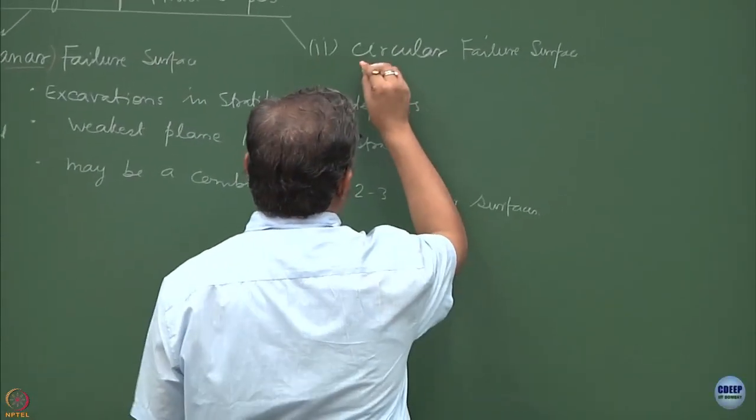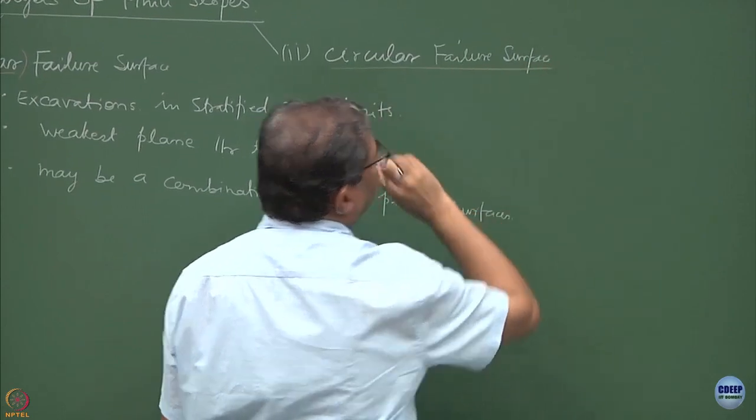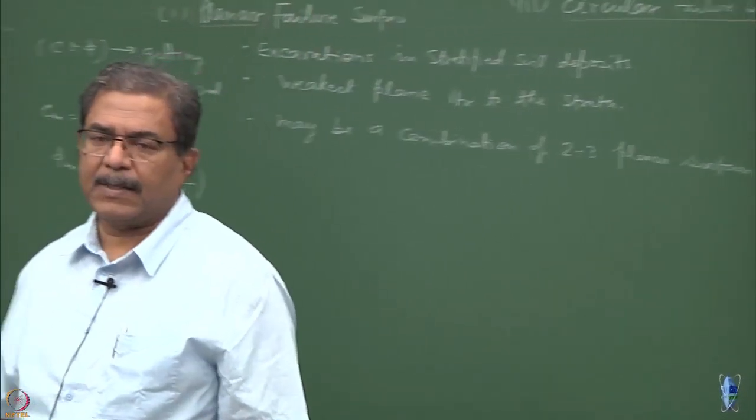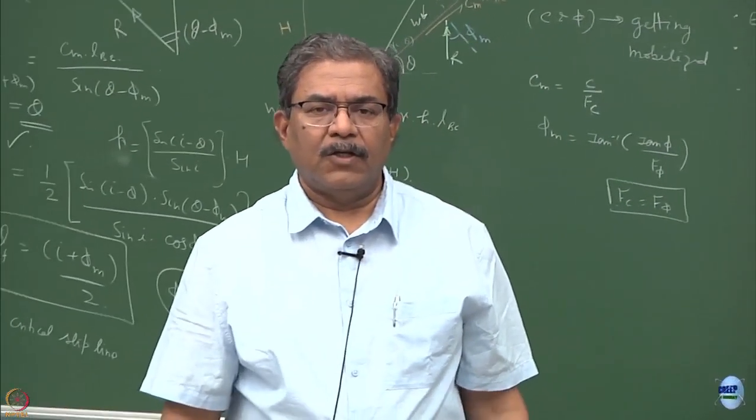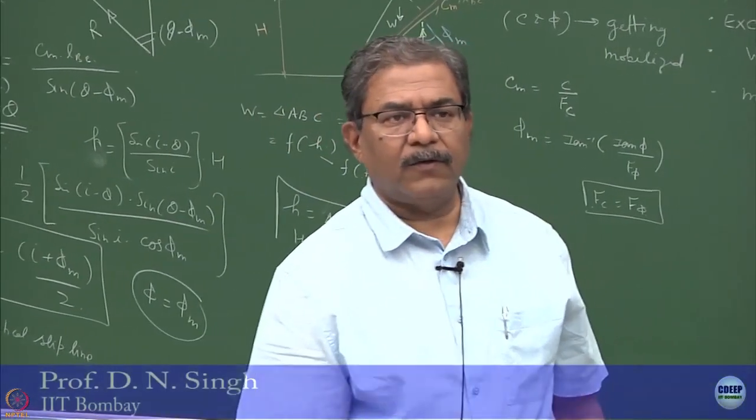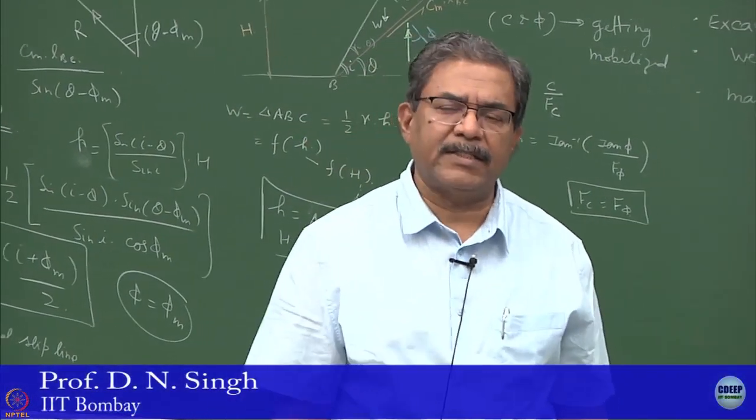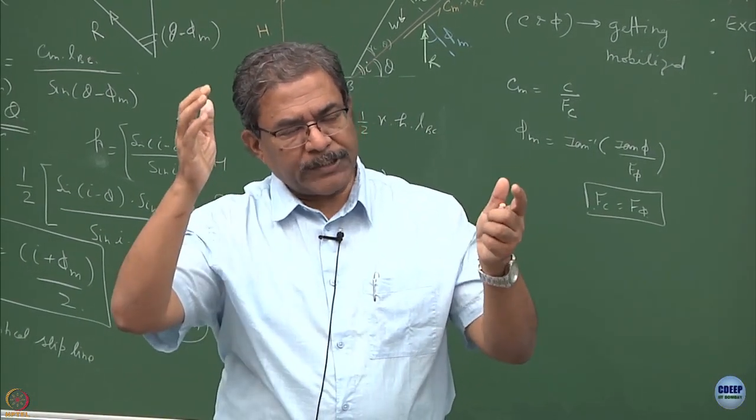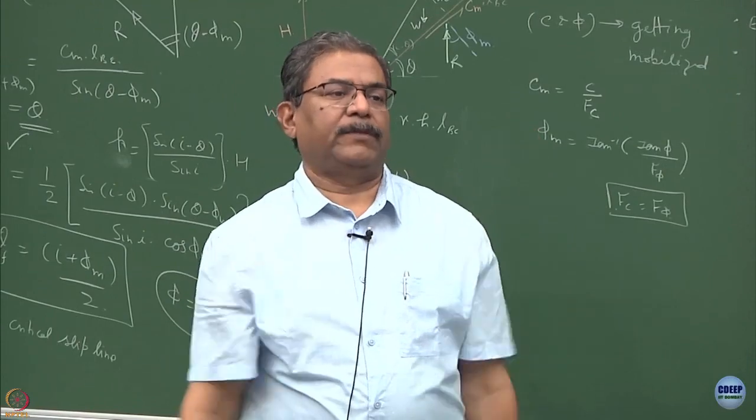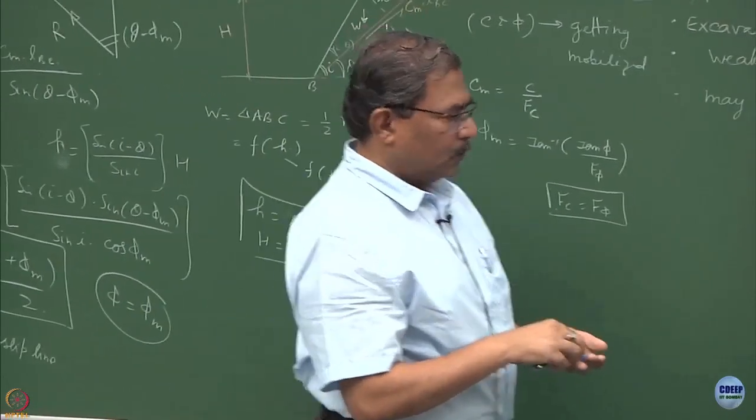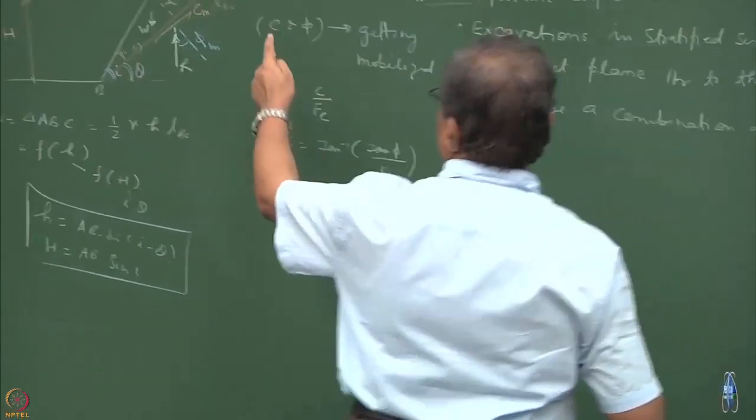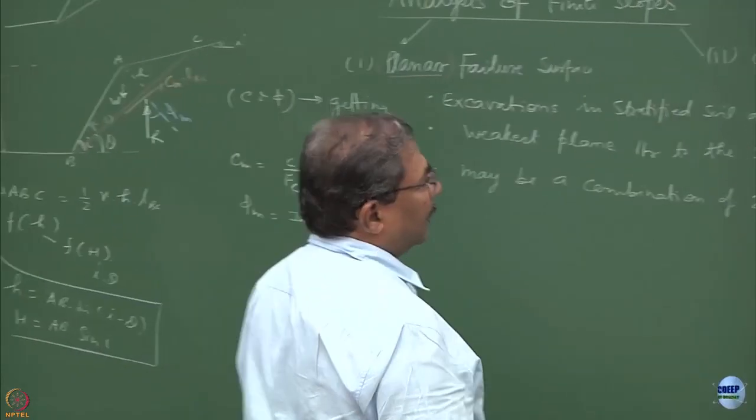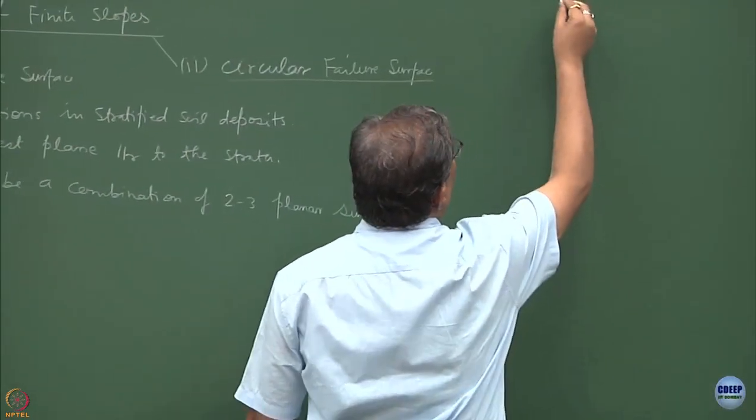Let us start discussion on the circular failure surface. Historically, the circular failure surfaces depict the rotational failure of the slopes. This is planar, now we are going to talk about rotational failure.